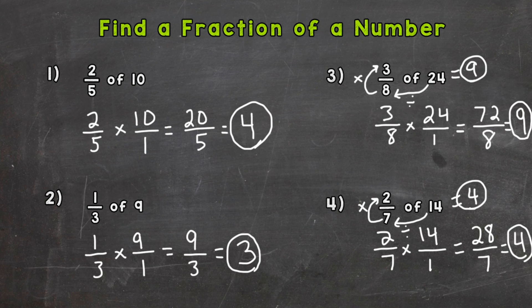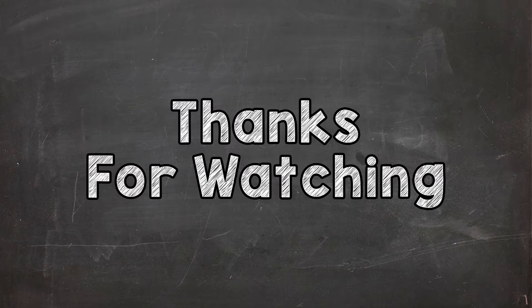So there you have it — that's how you find a fraction of a number. We can create a multiplication problem and multiply straight across, or we can divide first to find what one fractional part equals, and then multiply by the numerator. For example, 1 seventh of 14 is 2, so 2 sevenths of 14 is 2 times 2, which is 4. Hopefully that helped — until next time, peace!